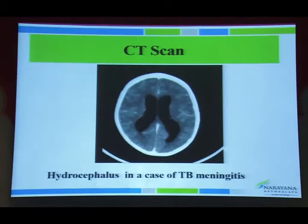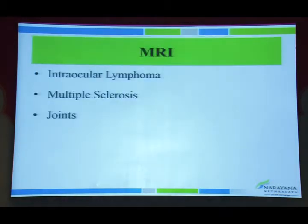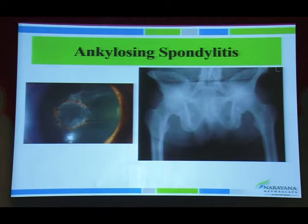CT scan and MRI of the brain are ordered when lymphoma or multiple sclerosis is suspected. An example showed TBM with hydrocephalus on MRI. MRI of the sacroiliac joints picks up early changes in ankylosing spondylitis much faster than X-ray, showing narrowing of the sacroiliac joint space.